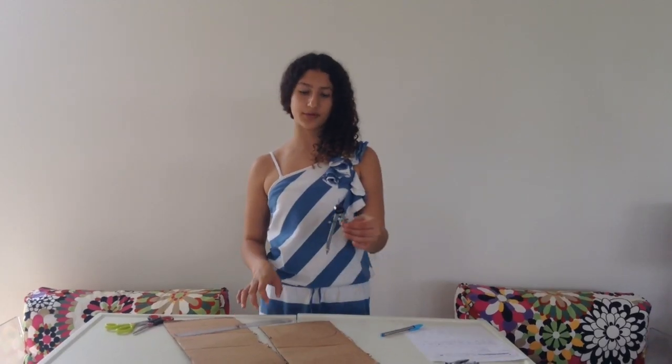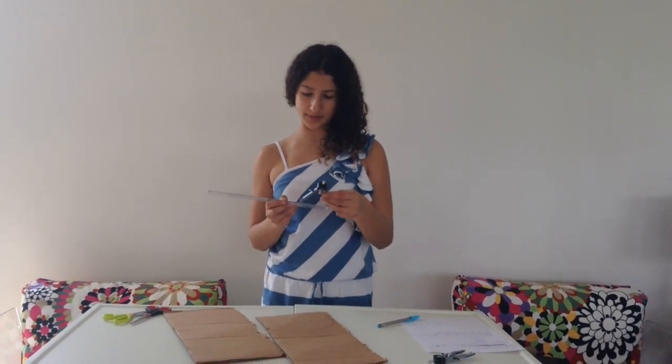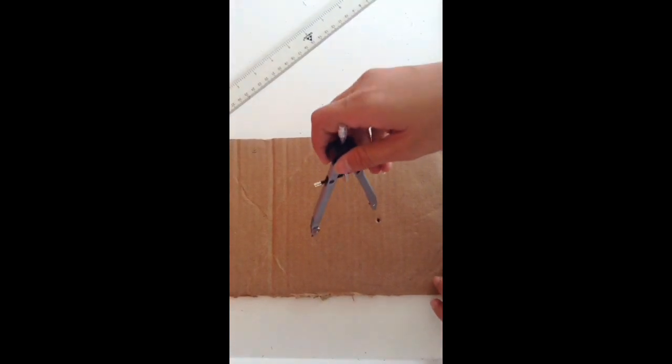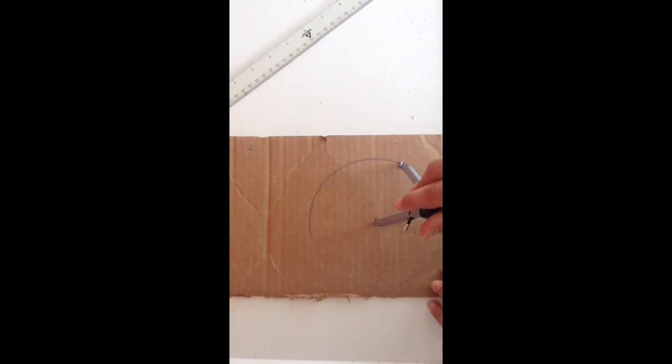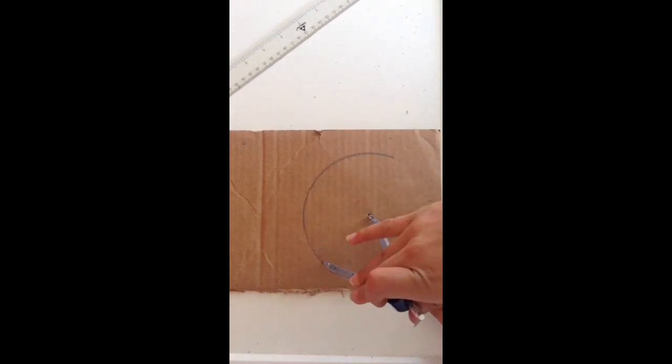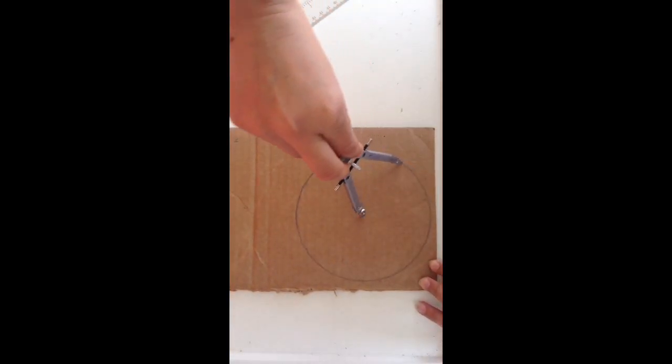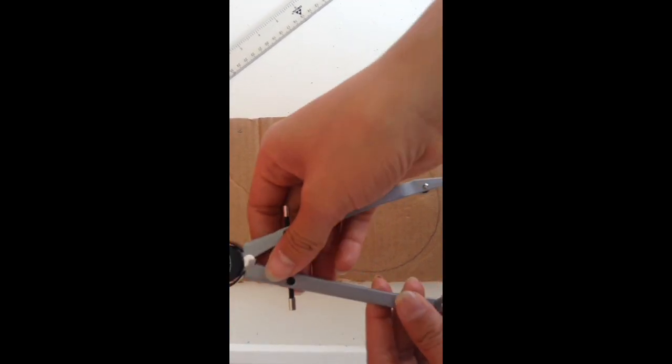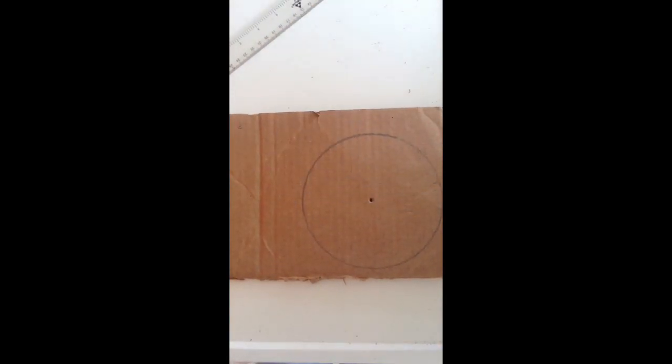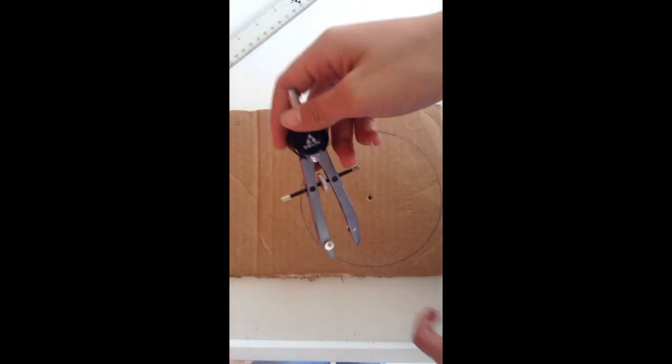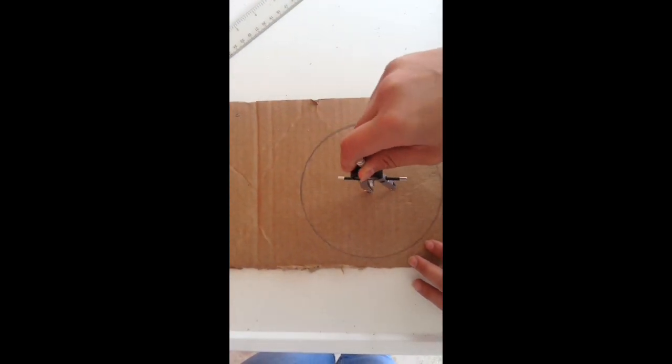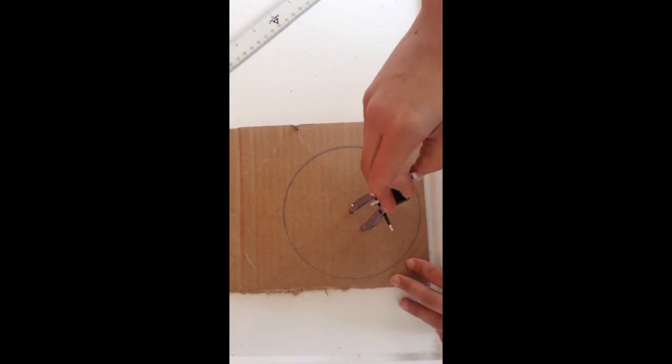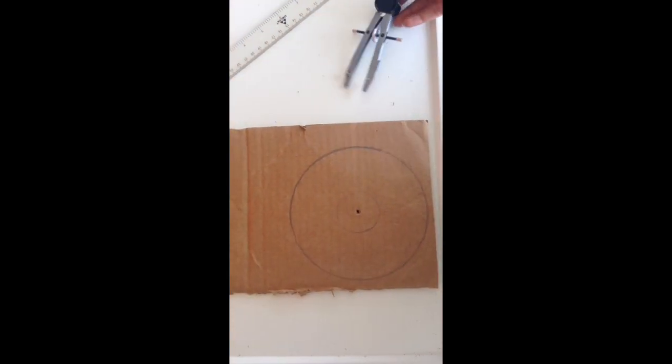First, you have to open your compass at 7.3 cm. Then you have to do a circle like this. And now you have to close your compass at 2 cm and do another circle inside of the other. And cut it.